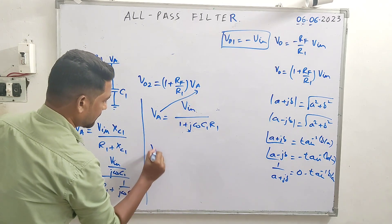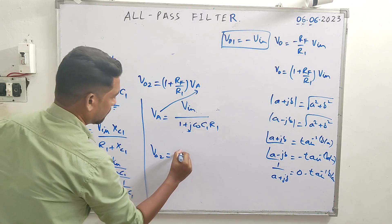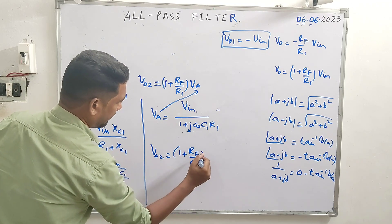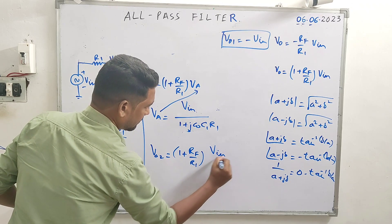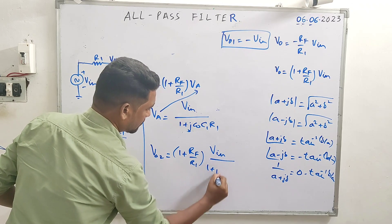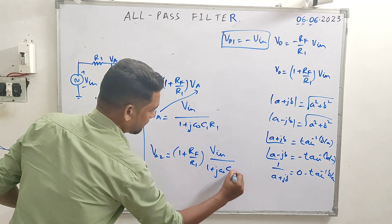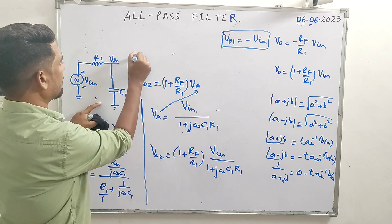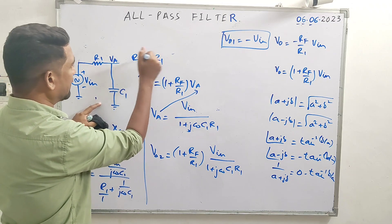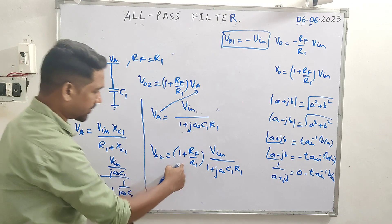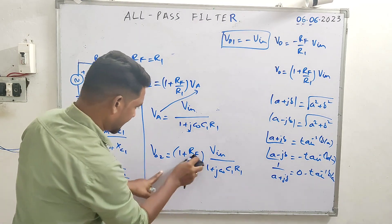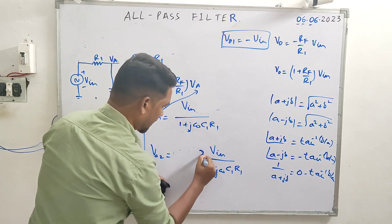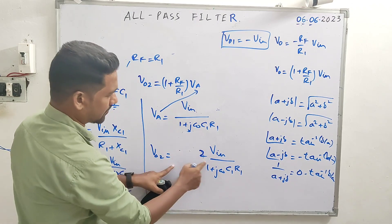Plugging Va into the expression for V_naught_2: V_naught_2 equals (1 + RF/R1) times Va, where Va equals Vin/(1 + jωC1·R1). Applying the condition RF equals R1, the bracket becomes 1+1 equals 2. Therefore V_naught_2 equals 2·Vin divided by (1 + jωC1·R1).